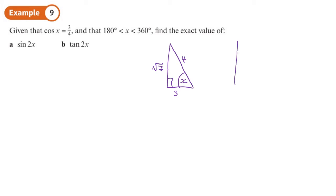Using a cast diagram. C A S T. Now this time it doesn't say acute or obtuse. It says that angle x is actually could be in either one of these two segments here. It's between 180 and 360. Now, if we look at the original question, cos x is positive.